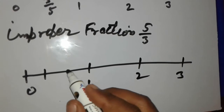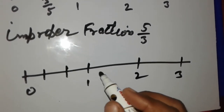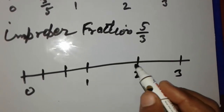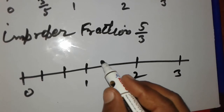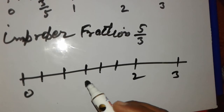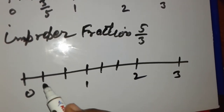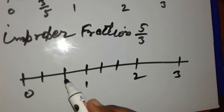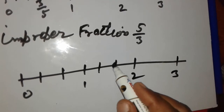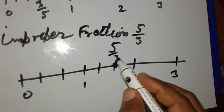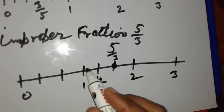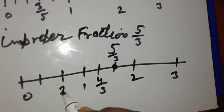We divide 0 to 1 into parts: 1, 2, and 3. We also divide the part between 1 and 2 into 3 equal parts: 1, 2, and 3. The numerator is 5, so we count: 1, 2, 3, 4, 5. This point is 5 upon 3. This point is 4 upon 3, this point is 3 upon 3, and this point is 2 upon 3.